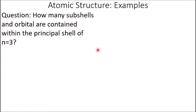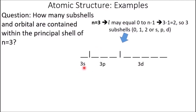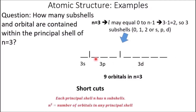How many subshells and orbitals are contained within the principal shell of n equals 3? With n equals 3, L can equal 0 to n minus 1, so L has a maximum value of 2 — meaning there are 3 subshells: S, P, and D, i.e., 3s, 3p, and 3d. Within those, there's 1 orbital in the S subshell, 3 in the P subshell, and 5 in the D subshell — giving 9 orbitals total. As a shortcut: each principal shell n has n subshells, and n² orbitals.